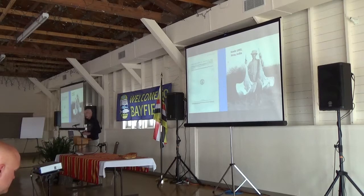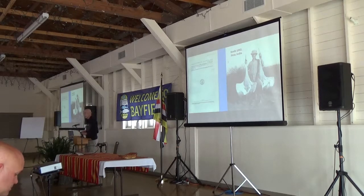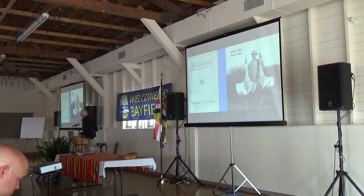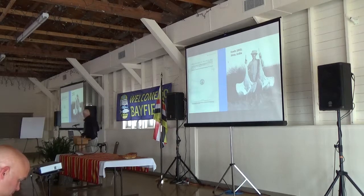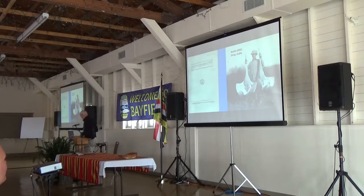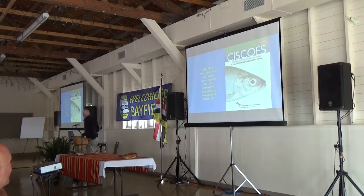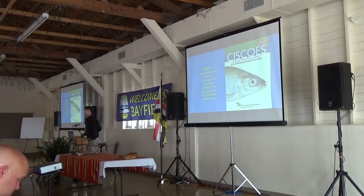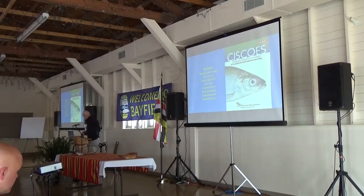I'll be talking about two monographs that have been done on the Coregonines of the Great Lakes. The first one was done by Keltz, published in 1929. This is a shot of Keltz after he came up working on the Coregonines. The second monograph was published in 2016. Let's just focus on ciscoes.